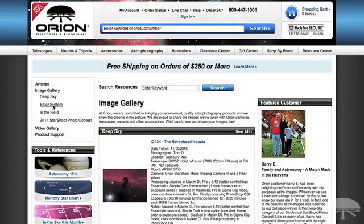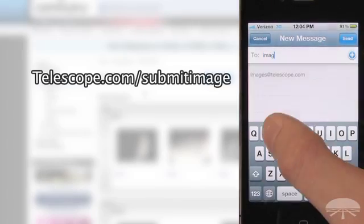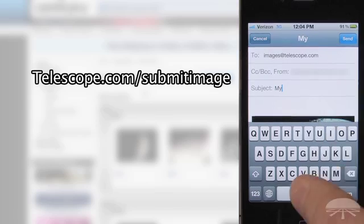Another way to share your images with other astronomers is by submitting it to the Orion Image Galleries. If you have an email account enabled on your phone, you can easily send your astro images by following the directions at telescope.com slash submit image. Emailing photos from your iPhone means sharing photos wherever you are instantly.